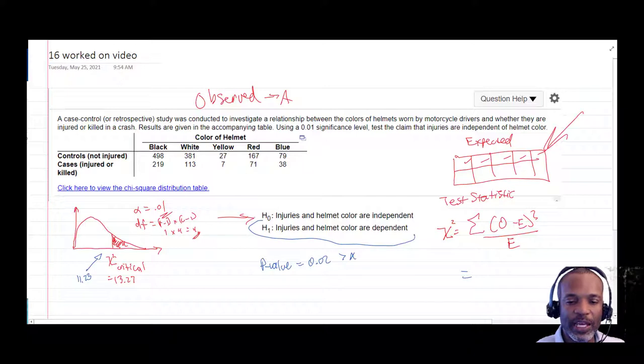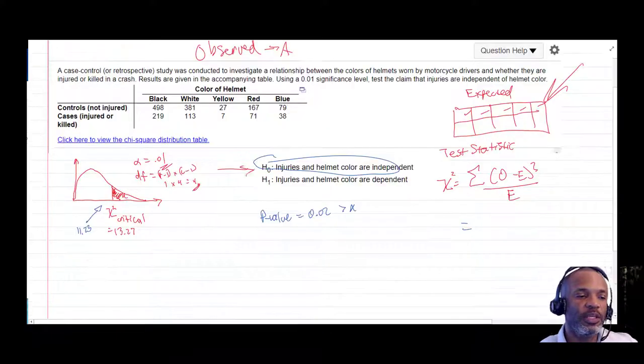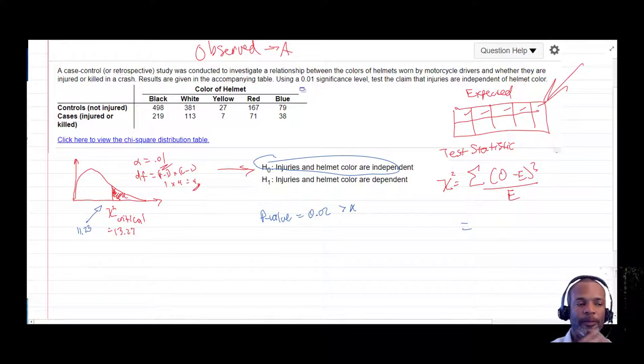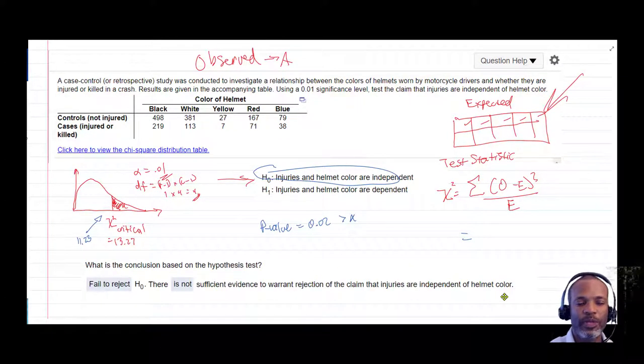So we do not have enough evidence to reject the null hypothesis. So let's summarize that with a statement. There's not enough evidence to reject the claim that injuries and helmet color are independent. So that was the claim, and we didn't find enough evidence to reject that claim.